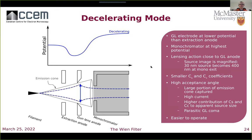In decelerating mode — available on microscopes equipped with an X-FEG, as both our Titans now are — the gun lens anode is held at a lower potential than the extraction anode, and the monochromator is held at the highest potential. The lensing action of the gun lens is close to the gun lens anode, collecting a larger portion of the tip's emission. Because the effective lens is closer to the filament, decelerating mode results in a larger magnification of the source image at the exit plane of the mono. Although aberration coefficients of the gun lens in this mode are lower, spherical and chromatic aberrations contribute more strongly because of the higher acceptance angle. However, this mode gives a much higher current and is easier to operate.